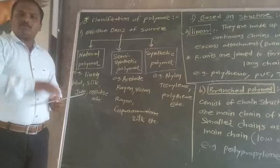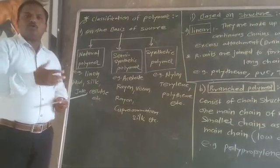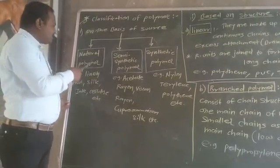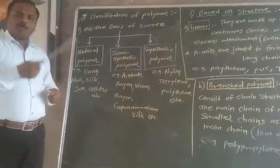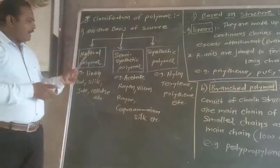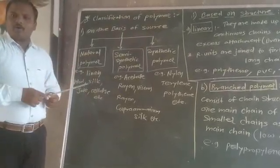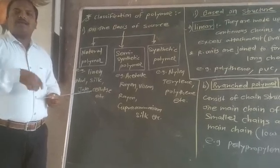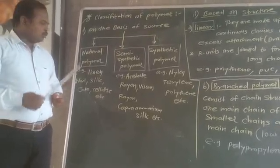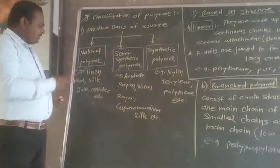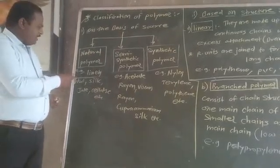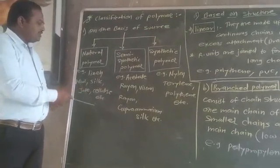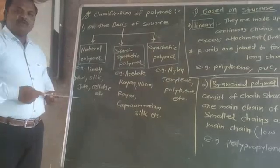If a polymer is obtained directly from a plant or animal source, then it is a natural polymer. Examples of natural polymers include cellulose and others derived from plant or animal sources.